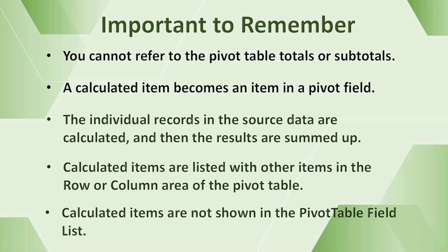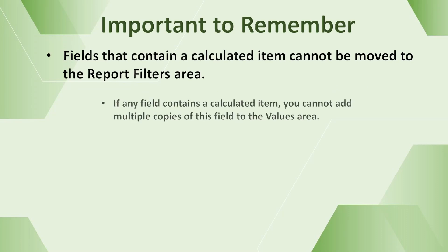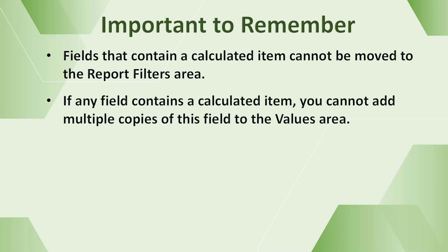Calculated items are not shown in the pivot table field list. Fields that contain a calculated item cannot be moved to the Report Filters area. Also, if any field contains a calculated item, you cannot add multiple copies of any field to the values area — for example, you could not add Quantity twice to show both the minimum and maximum values.